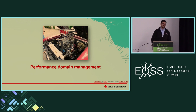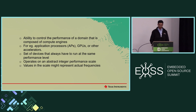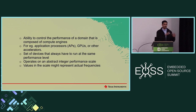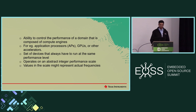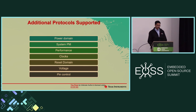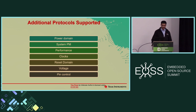Let's look at one more interesting concept called performance domain management, where you have the ability to control performance of a domain composed of various compute engines. The set of devices that always have to run at the same performance level are grouped into performance domains. It operates on an abstract integer scale — it can be actual frequency values or even abstract values, up to the implementation. Here are some of the additional protocols that SCMI supports today: power domain, system power management, performance, clocks, etc.